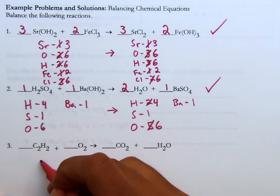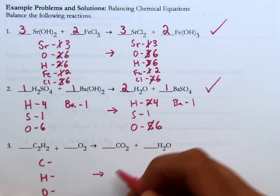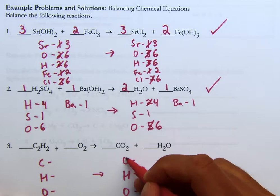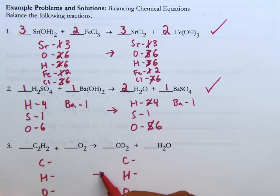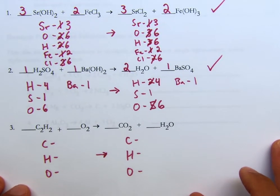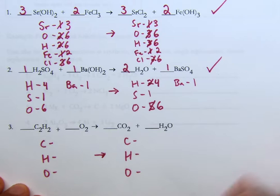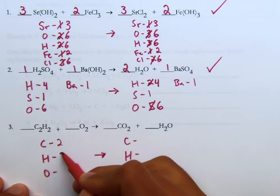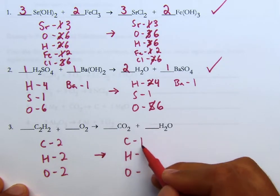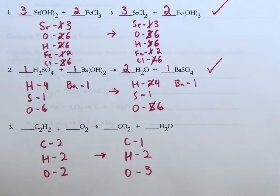For example three, the elements are C, H, and O on both sides. Counting: on the left we have two carbons, two hydrogens, two oxygens. On the right we have one carbon, two hydrogens, and two plus one is three oxygens.